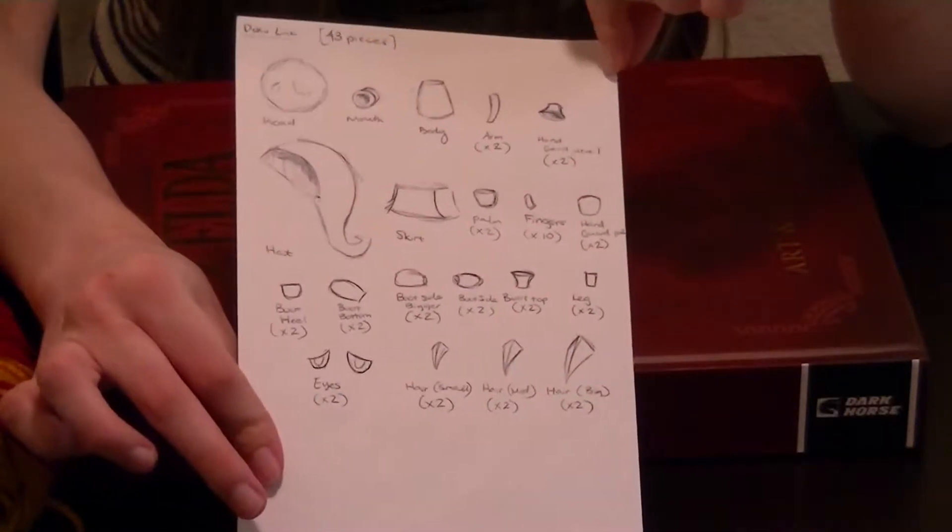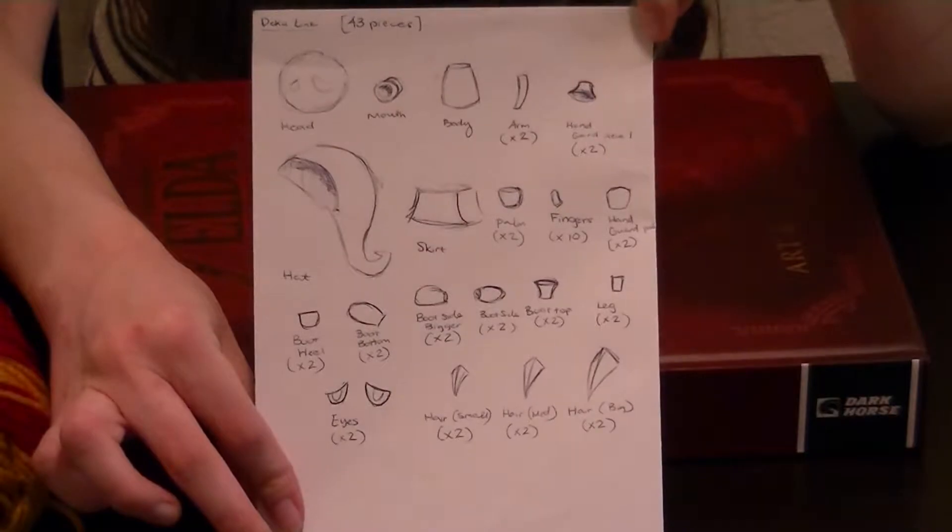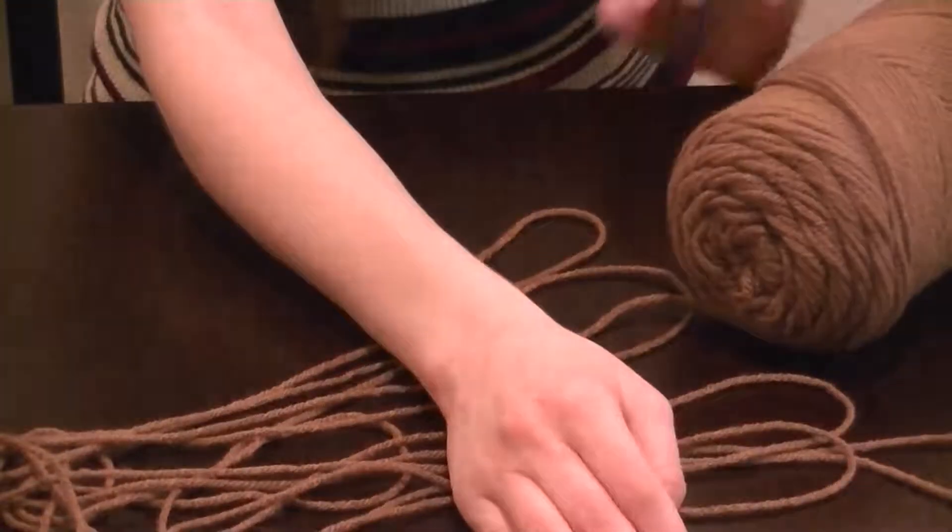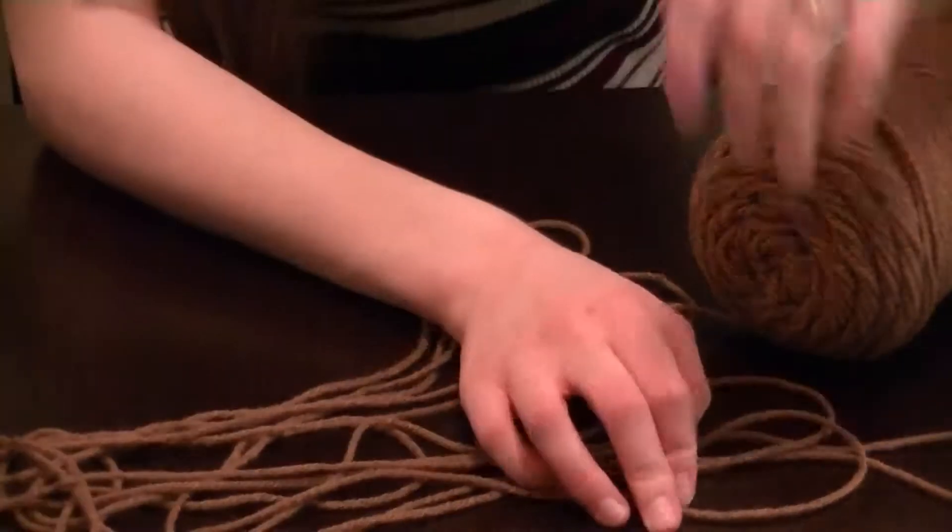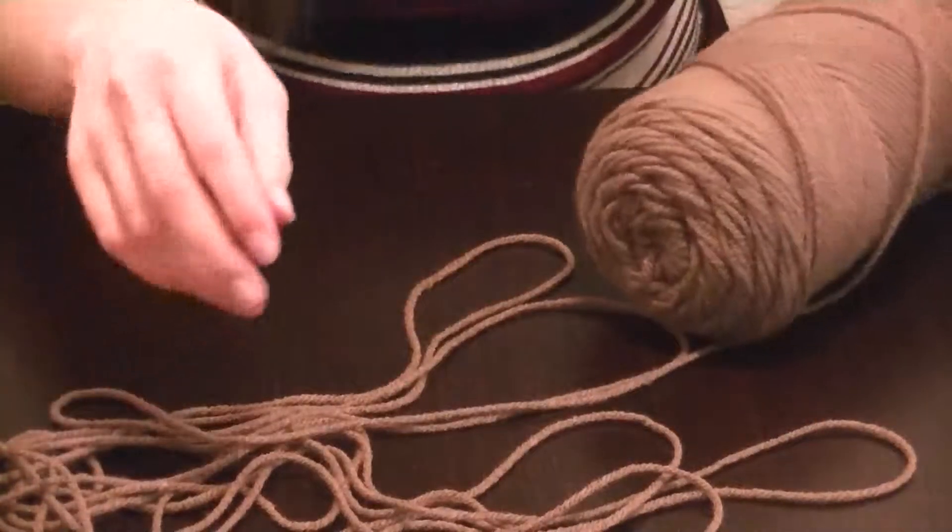Completing this is going to take 43 separate pieces. I like to write my own patterns. I don't follow patterns anymore. I write them so that I'll remember them later if I perhaps want to do something again. So we're going to start with the head. I want my Deku Link to be about four inches, three or four inches tall. And so I'm using a 2.10 millimeter hook.